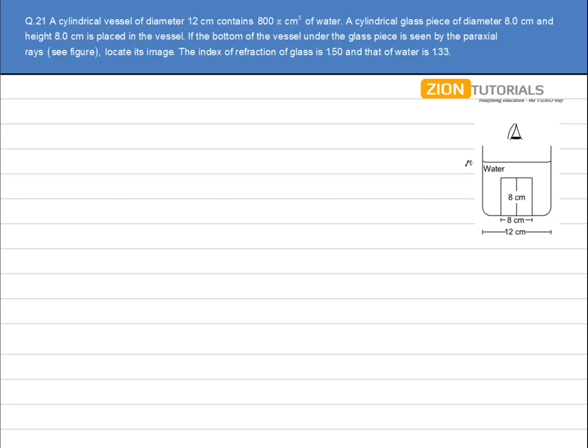First, I have to calculate the total height of water. I will add the volume of this cylinder to that of water to get the complete volume of the cylinder, which is given as 800π plus πr²h of the small cylinder.